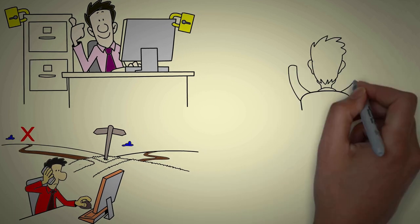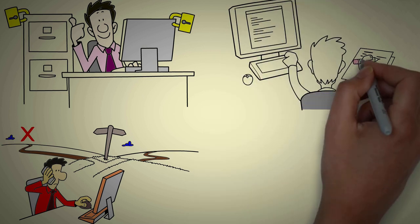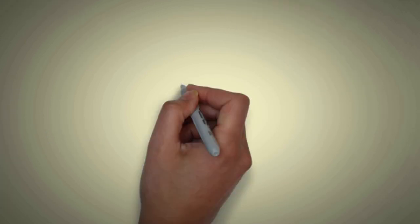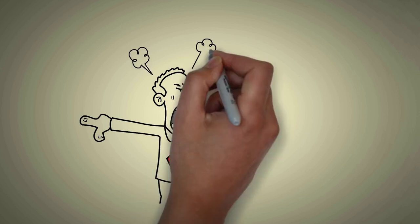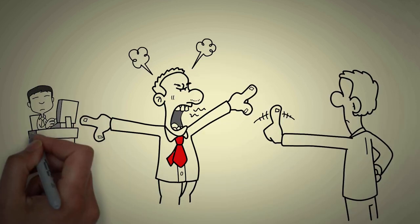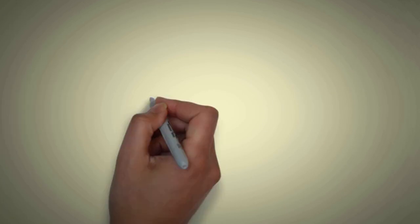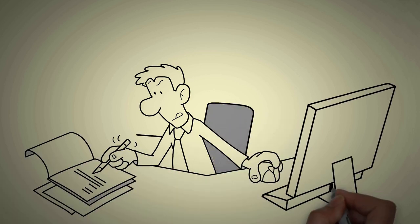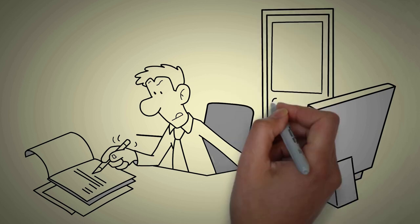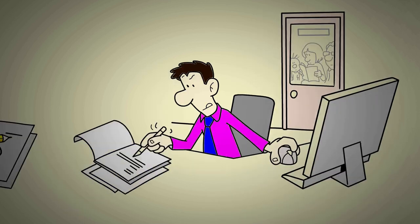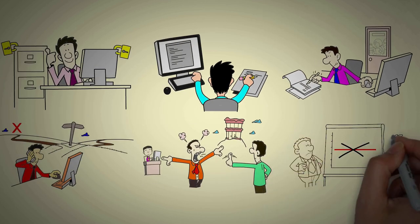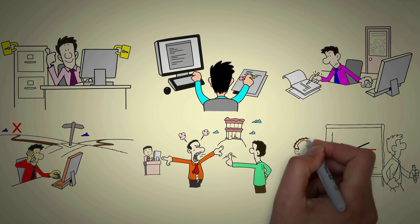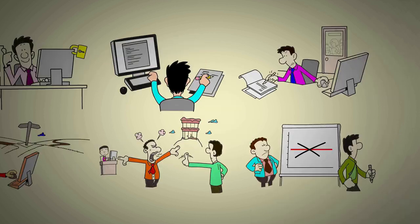They often prefer to work alone and prefer to avoid large groups of people. Sigma males prefer to live their lives on their terms and are not easily influenced by the opinions of others. They are often highly creative, but due to their private nature, their ideas may not always be given the spotlight they deserve. Sigma males often prefer to keep their thoughts and opinions to themselves, sometimes even appearing aloof and distant.